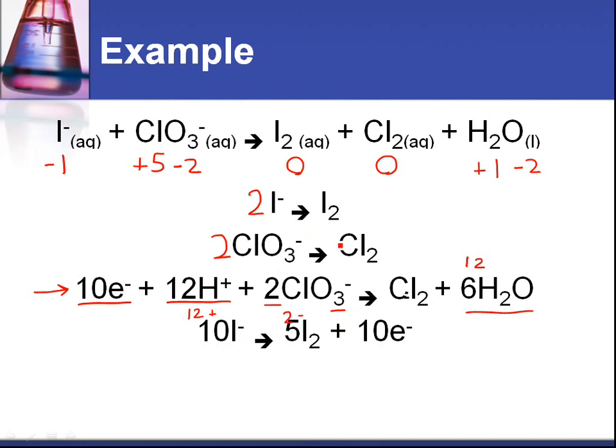I've multiplied everything by 5 because we need 10 electrons. That gives us 10 I negative and then 5 I2 plus 10 e negative. We've now got the same number of electrons on each side for each half equation.